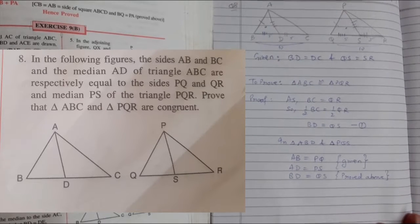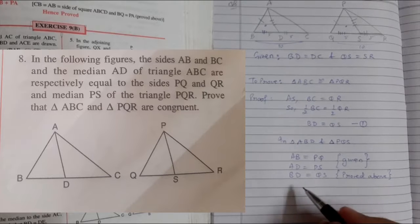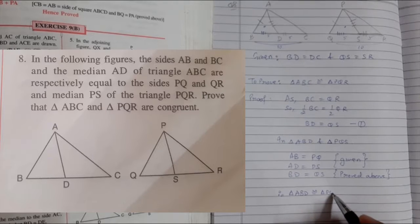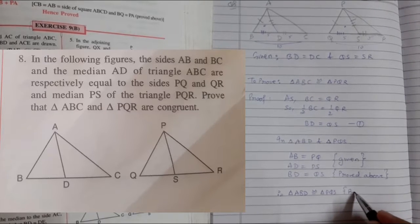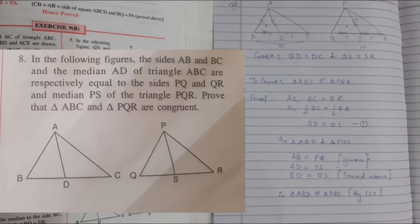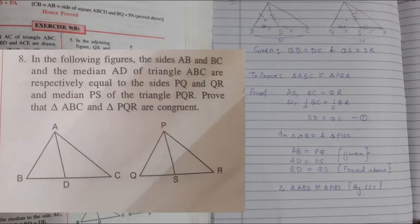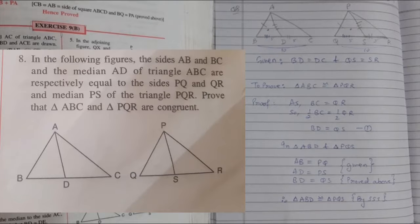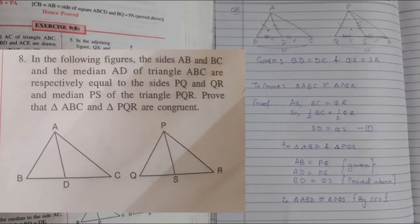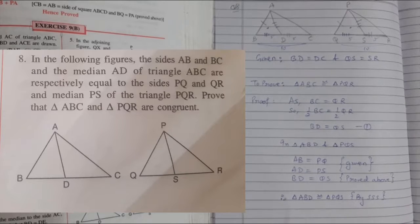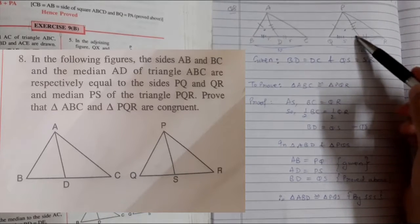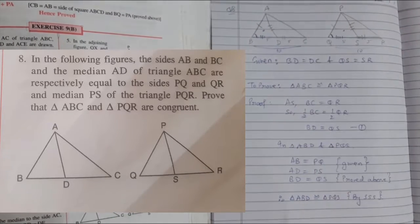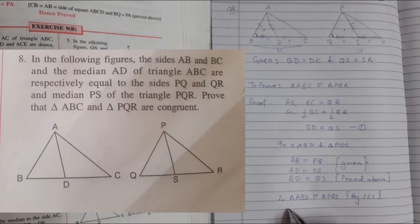Now we have three sides equal, therefore triangle ABD is congruent to triangle PQS by SSS congruency criteria. Since the triangles are congruent, the remaining elements are also equal. A triangle has six elements: three sides and three angles. If three are equal, the remaining three are also equal. So this angle equals this angle.